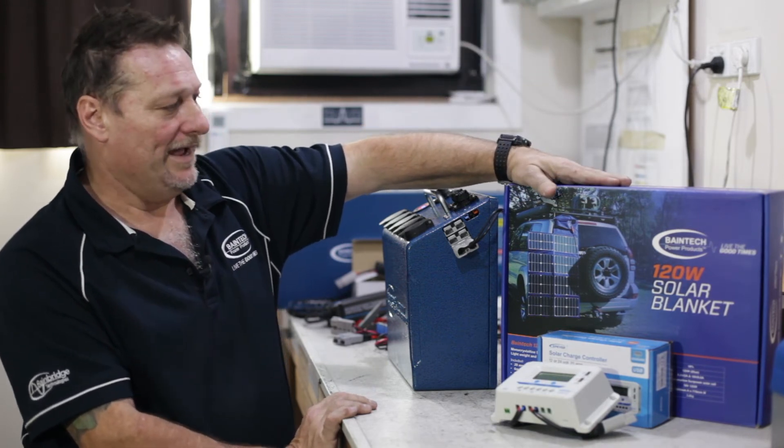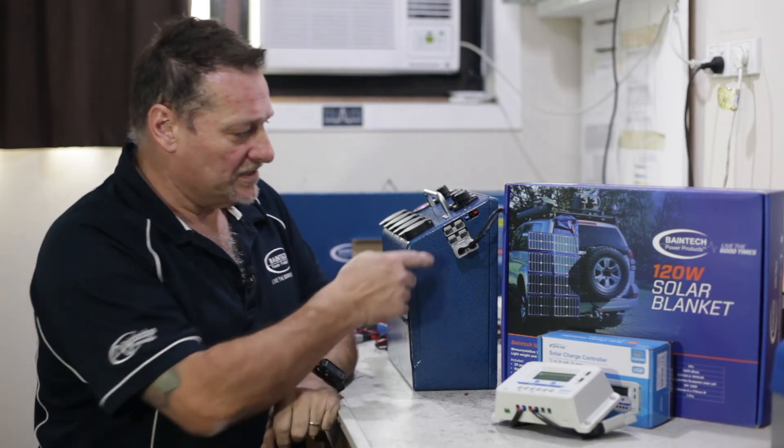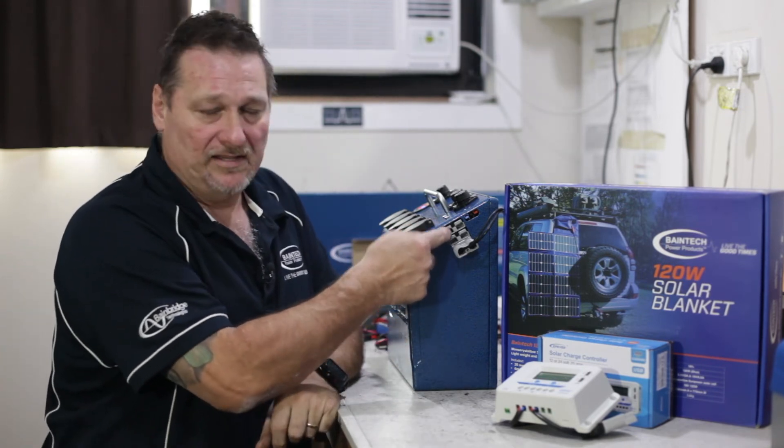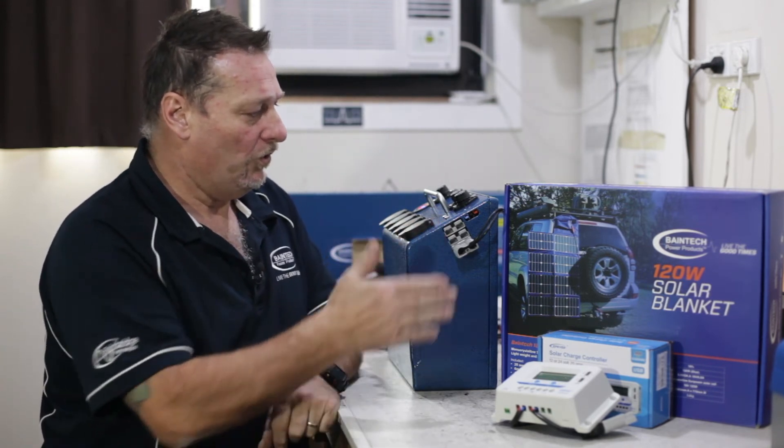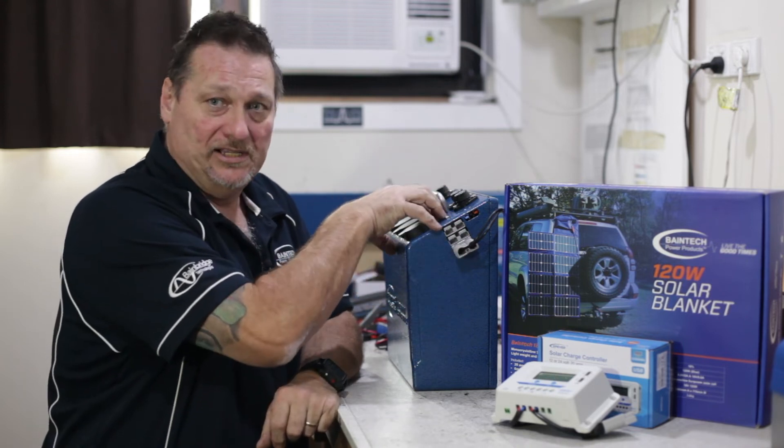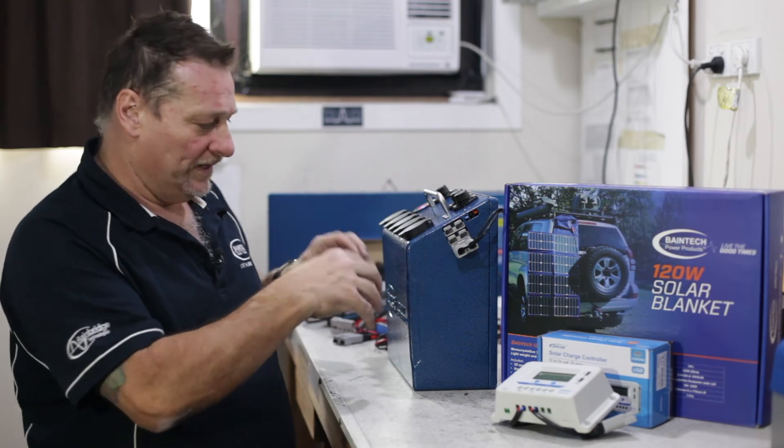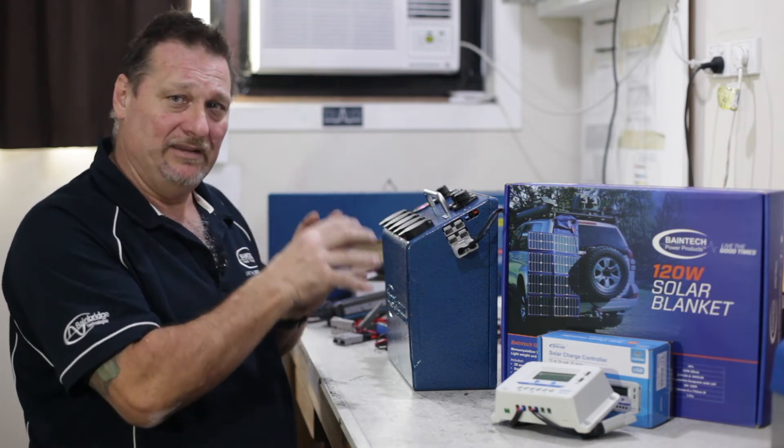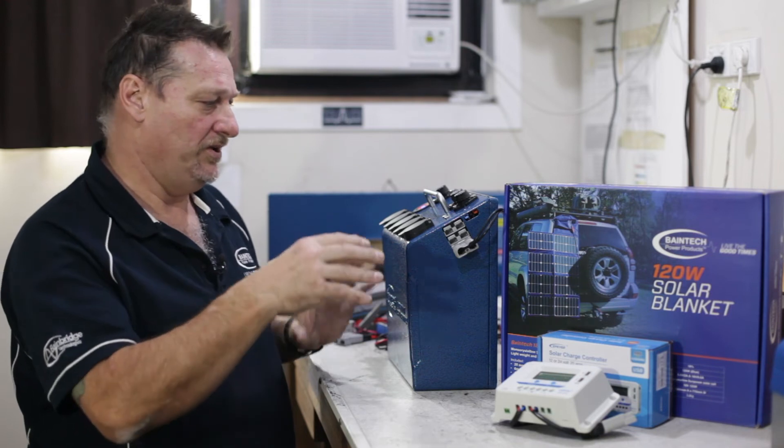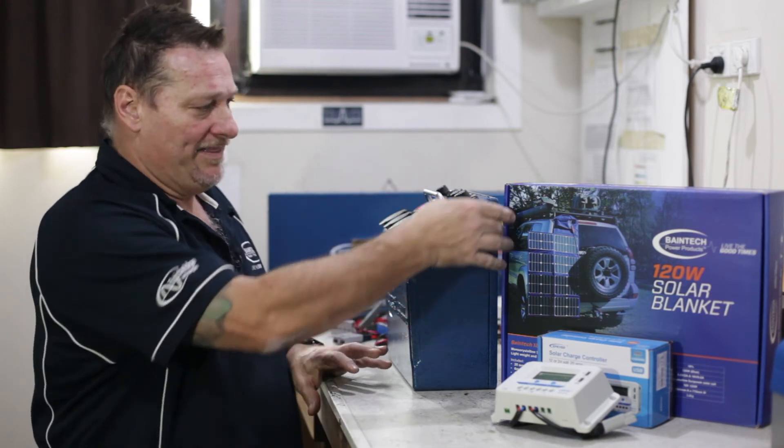We would have been using the 120 watt blanket outside but basically as I explained earlier these three Anderson plugs here are all connected to the battery cells inside at the same place. They're directly across the battery cells so they're an input and an output at the same time.